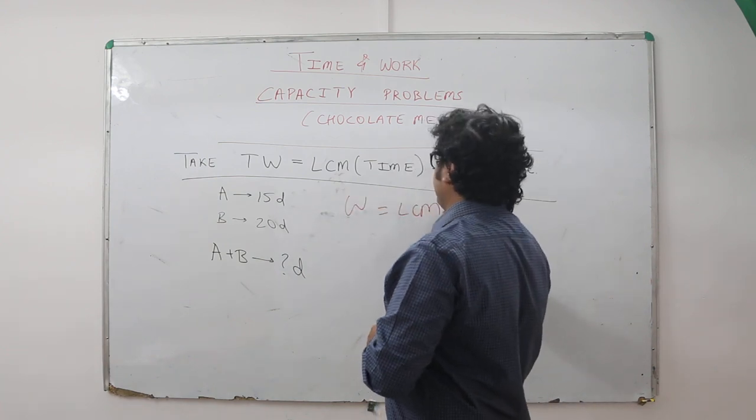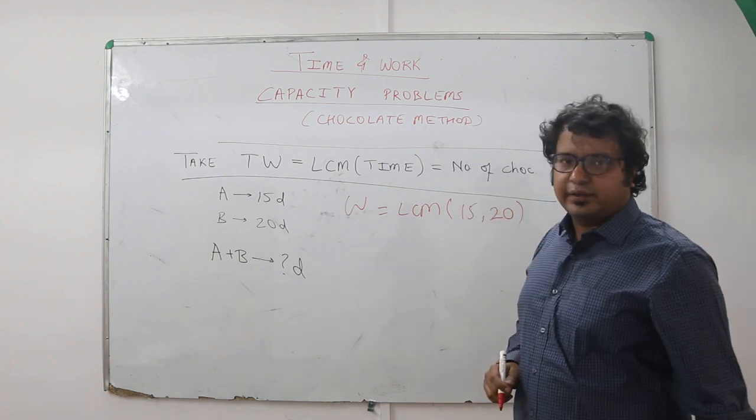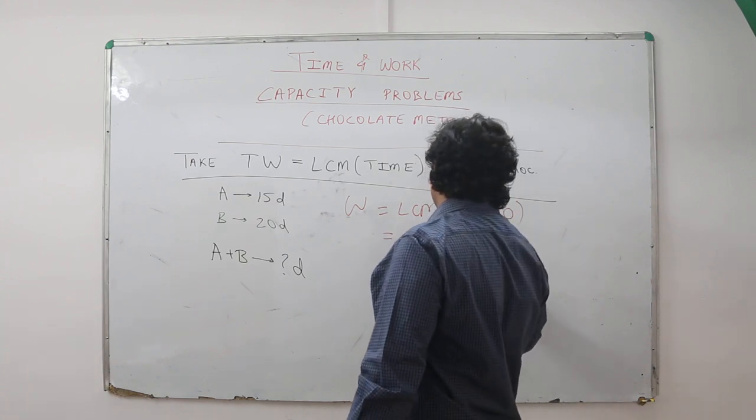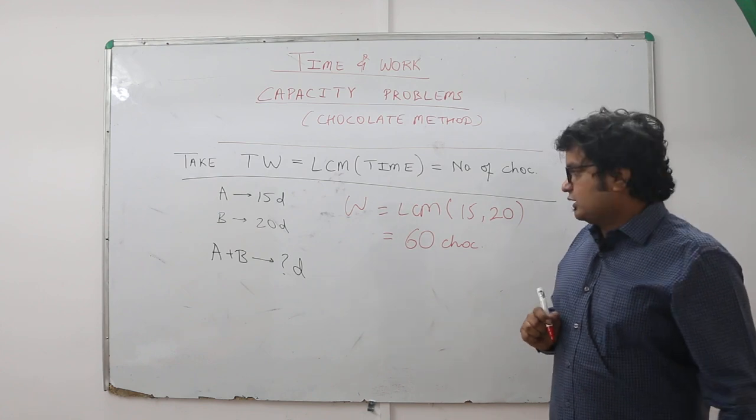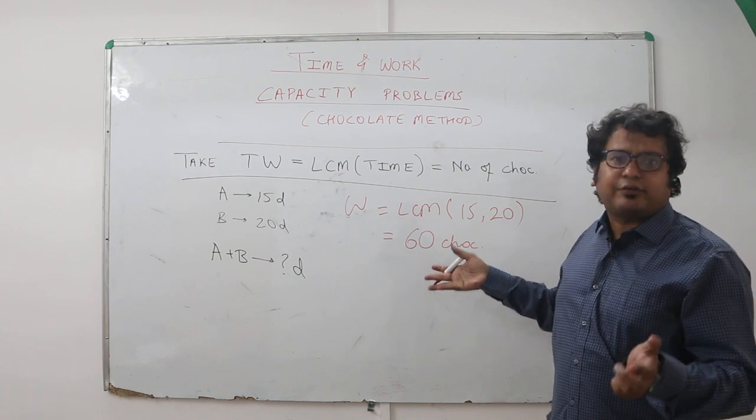Let me show this. Total work is LCM of time - what is 15 and 20? So if you find LCM you'll get 60. So the total work is to eat 60 chocolates.